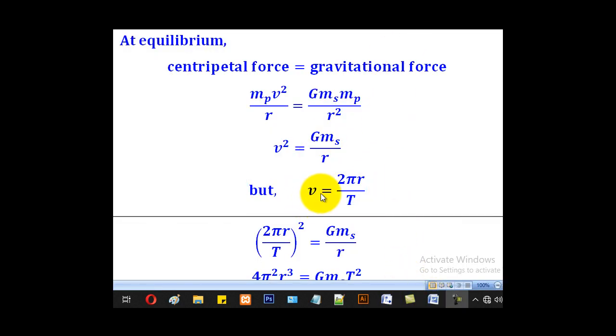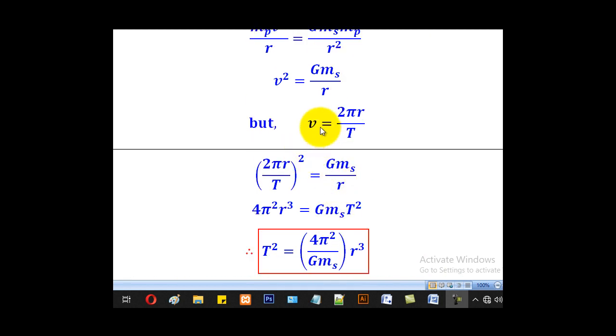Therefore, the velocity can be given as the circumference over the period. When you substitute this v here we shall come up with this part. And when you cross multiply we shall come up with this step. And when we make T squared the subject we shall come up with this.